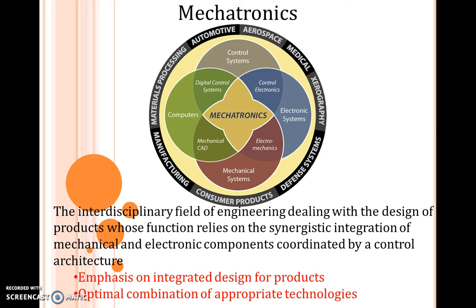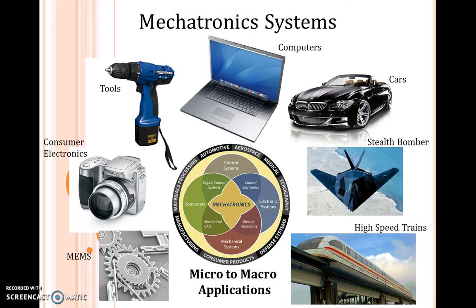The combination of mechanical and electronics is used in automotive, aerospace, medical, xerography, defense systems, consumer products, manufacturing, and materials processing. As you can see in the figure, various tools are shown: a hand drilling machine, computer, cars, stealth bombers, high-speed trains, consumer electronics such as cameras, and MEMS. All these aspects can be modified and worked out with the help of mechatronics systems.